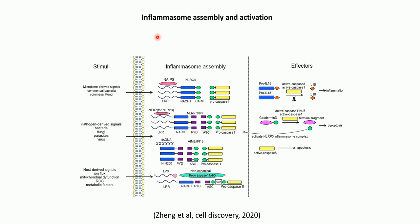Regarding inflammasome assembly and activation: there are different stimuli — those derived from the microbiome such as commensal bacteria and fungi, pathogen-derived signals such as bacteria, fungi, parasites, and viruses, and host-derived signals such as mitochondrial dysfunction, reactive oxygen species, ion flux, and metabolic factors. These signals are sensed by the sensor molecule, for example NLRC4 or NAIP.